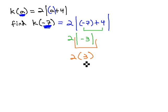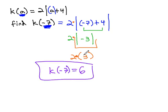Be sure we preserve the operation. It was always 2 times the absolute value, now it's 2 times 3, and 2 times 3 is simply 6. k of -7 is equal to 6. In other words, if we were to plug -7 into the k function, the answer we'll end up with, replacing a with the -7, is 6.